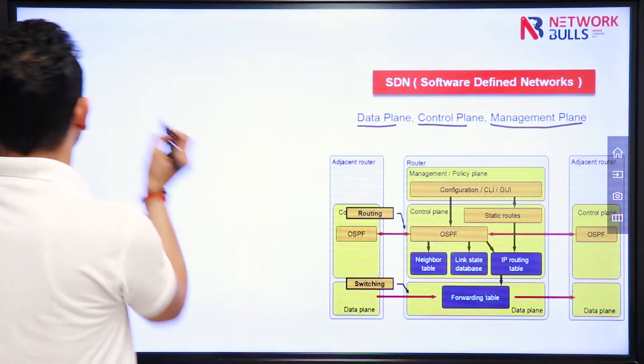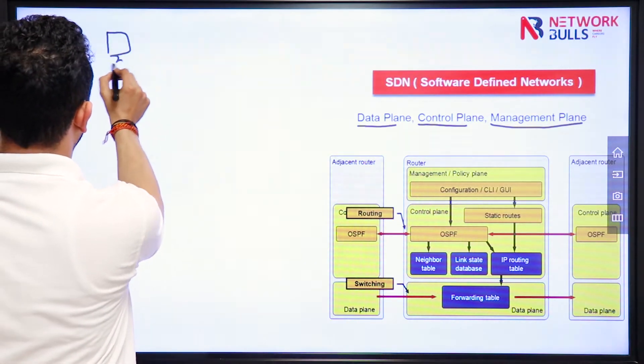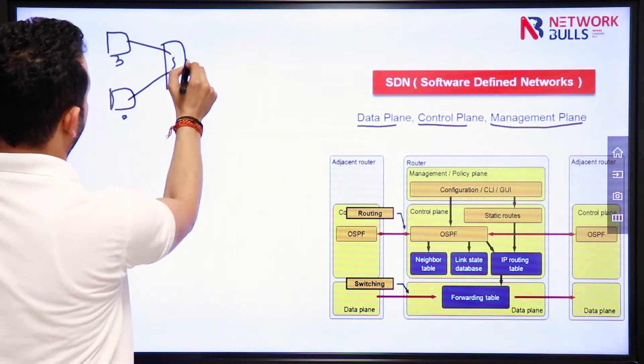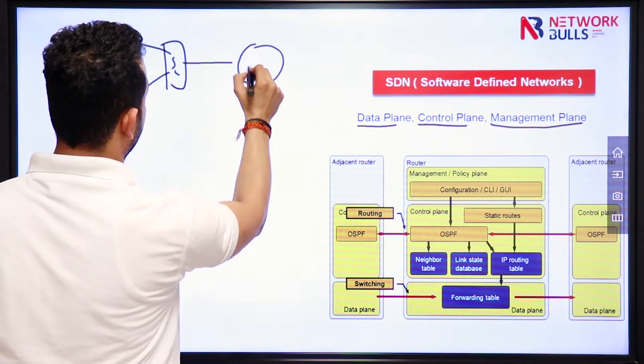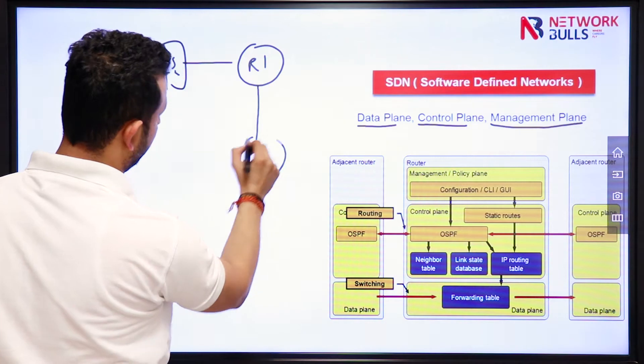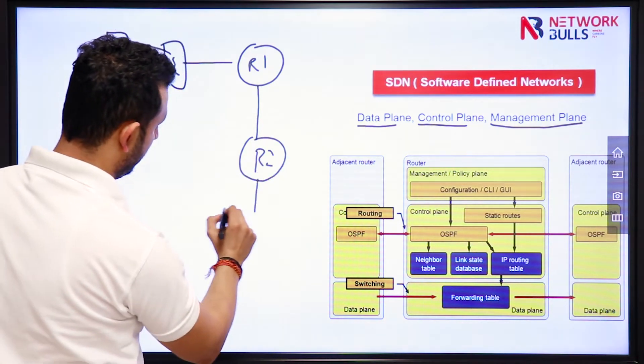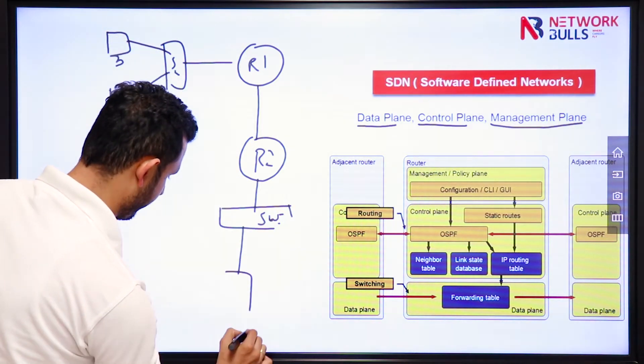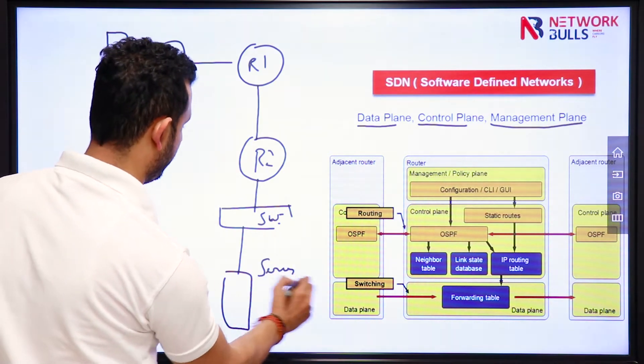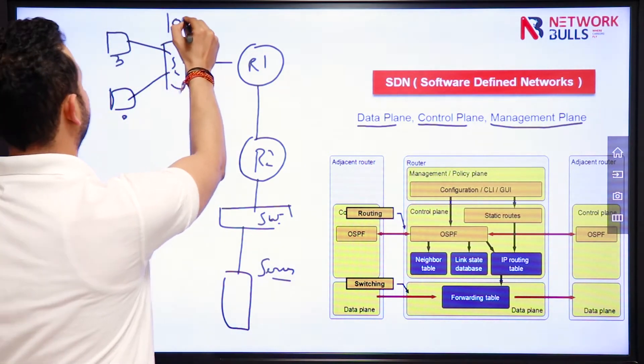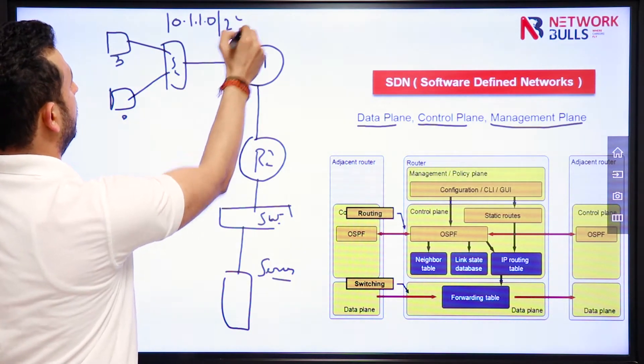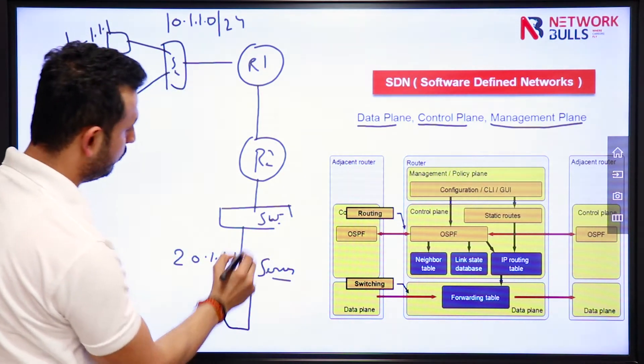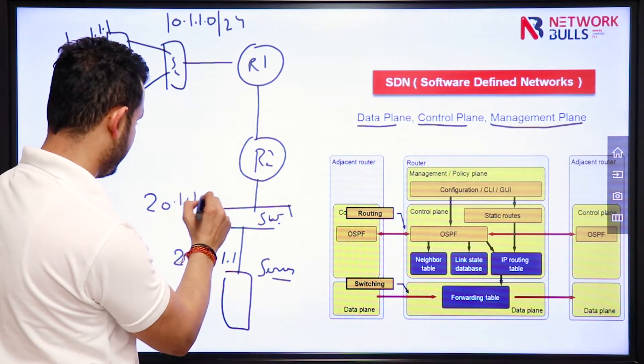Let me give you an example. This is your end user, you have a switch, this is your router R1, you have one more router R2 and here also you have a switch and this is your server. I can assume the networks as 10.1.1.0 slash 24 giving this user IP 10.1.1.1, giving the server IP 20.1.1.1 and network will be 20.1.1.0 slash 24.